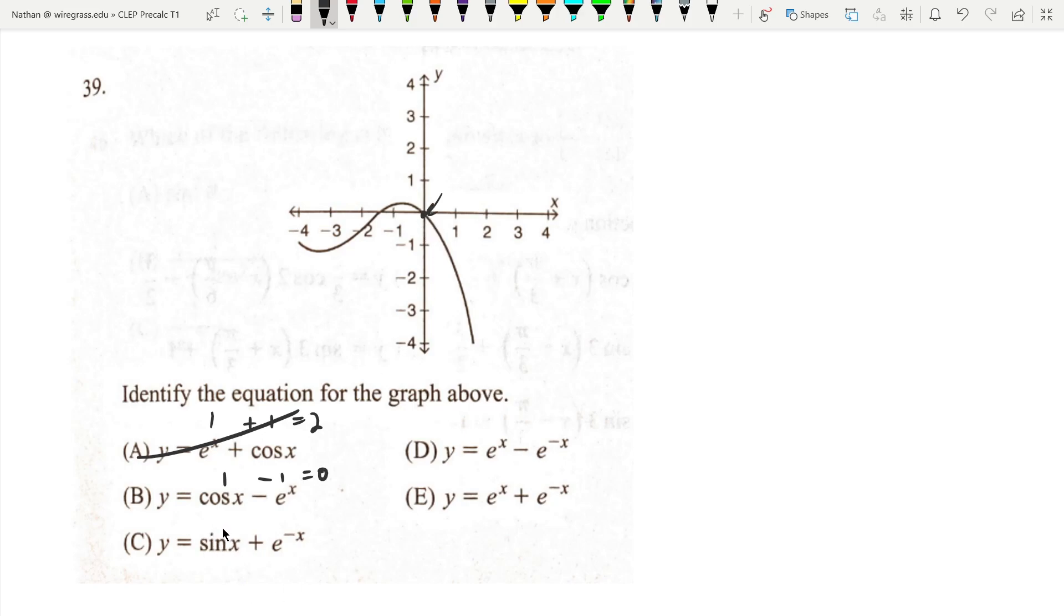Here we have sin(0) is 0, e^0 is 1, 0 plus 1 is 1. That one can't be it.